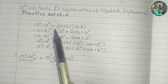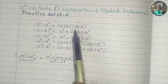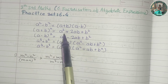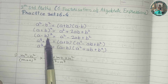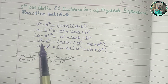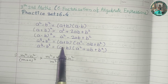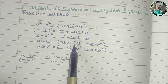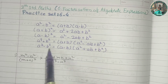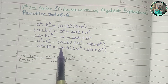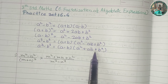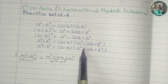The a² minus b² formula is (a + b)(a − b). The (a + b)² formula is a² + 2ab + b². The (a − b)² formula is a² − 2ab + b². The a³ + b³ formula is (a + b)(a² − ab + b²). The a³ − b³ formula is (a − b)(a² + ab + b²).